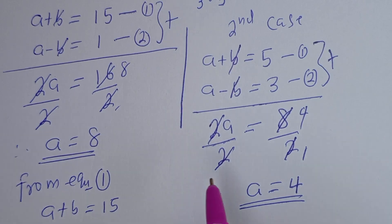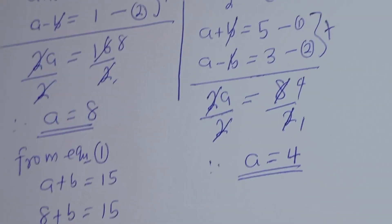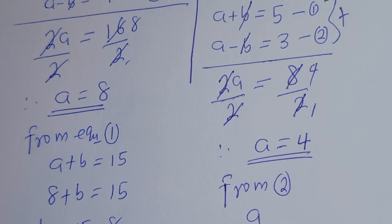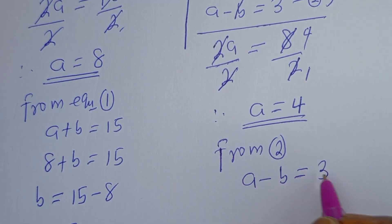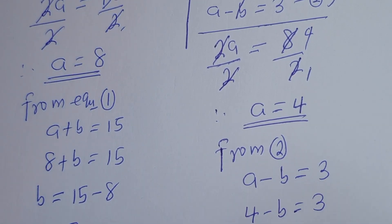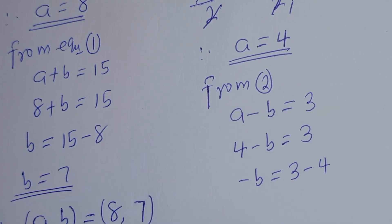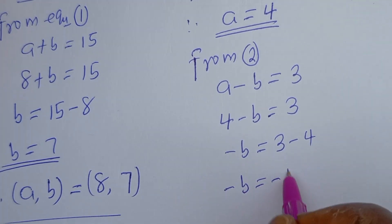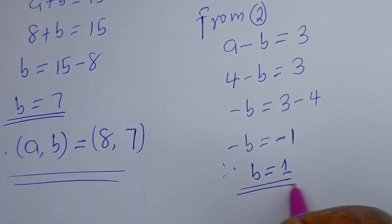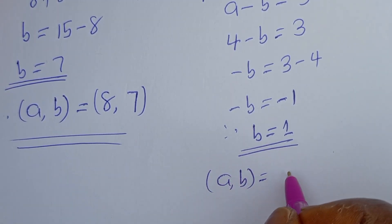We've got the value of a, which is 4. We can substitute for a in either equation 1 or 2 to get the value of b. I'm going to use equation 2: a - b = 3. When a = 4, we have 4 - b = 3, then -b = 3 - 4, so -b = -1, therefore b = 1.